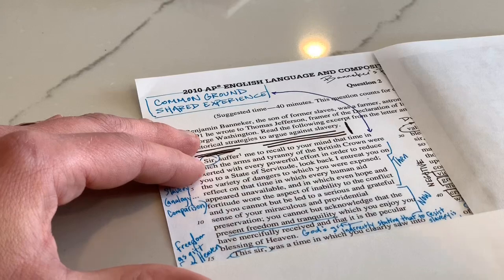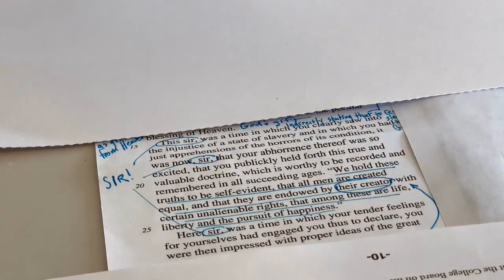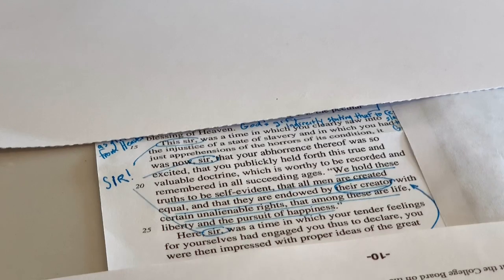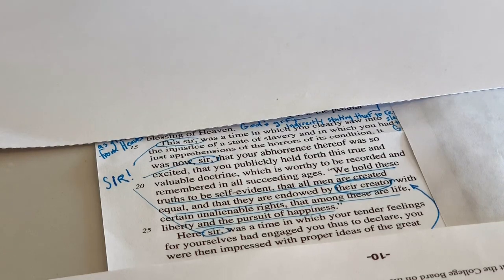He starts the next paragraph with 'sir' and uses it again in that paragraph, then starts the following paragraph with 'sir' as well. He says: 'This, sir, was a time in which you clearly saw into the injustice of the state of slavery... It was now, sir, that your abhorrence thereof was so excited that you publicly held forth this true and valuable doctrine... We hold these truths to be self-evident that all men are created equal and that they are endowed by their creator.' I circled 'creator' because he was already talking about heaven earlier. There's also a biblical allusion toward the end that we could use in our essay.